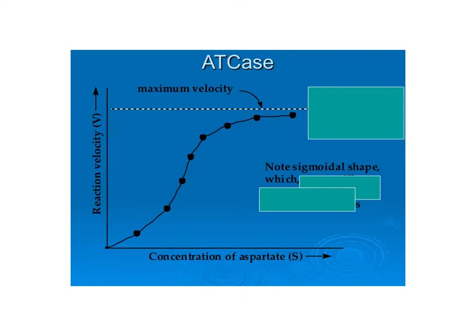At some point, it peters out because all the binding sites on all enzyme species are bound. So what order of reaction is it at high substrate concentration? Zero order. At high concentration of substrate, it becomes zero order with respect to aspartate. Obviously, if you don't have any carbamoyl phosphate around, it won't go very fast, but with respect to aspartate, it's zero order.